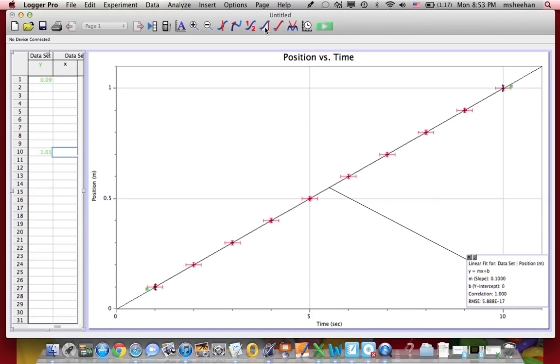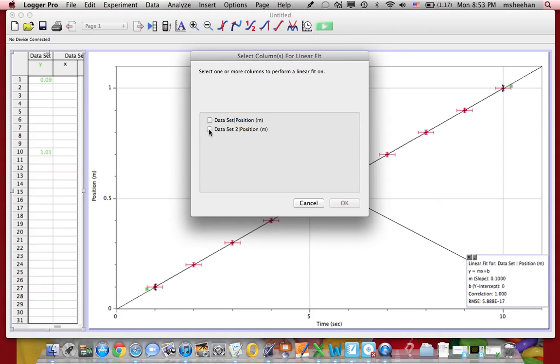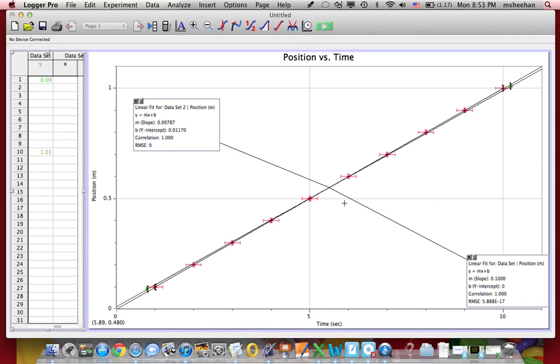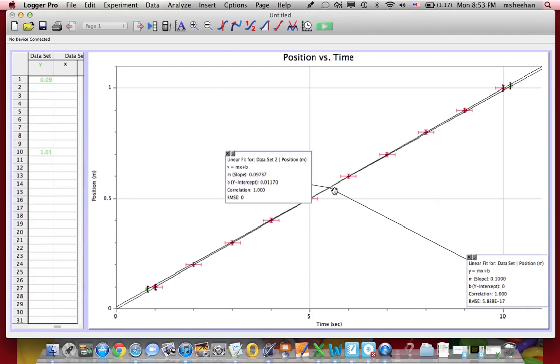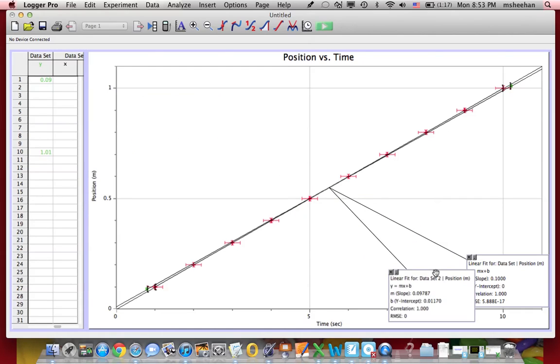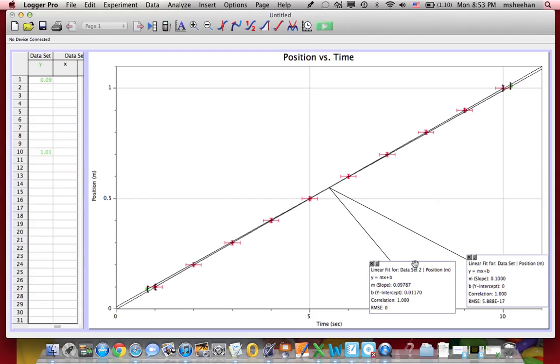So then what I'm going to do now that I have it is I'm going to draw a trend line using the linear fit, so I just click on the linear fit tool in the toolbar, and then we're only working with data set two because I already have my slope for data set one. And if you notice, I have a slope of 0.0979.